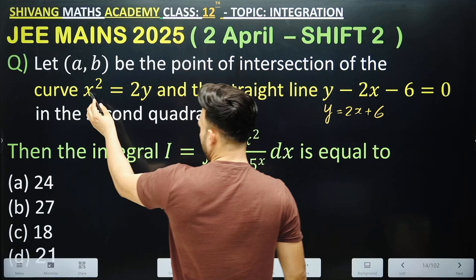Solving the equation gives x = 3 and x = -2. We reject x = 3 because in the second quadrant x must be negative. Therefore, x = -2.